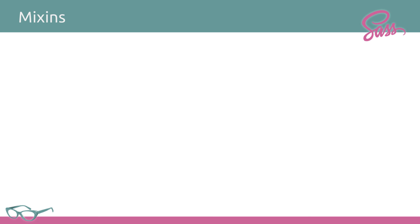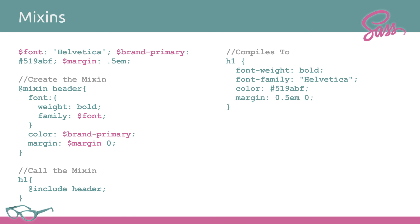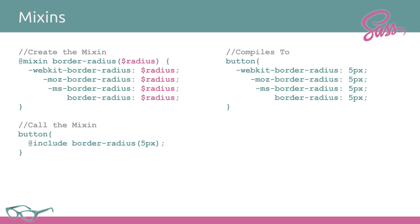Mixins are sort of like functions, except they actually put output into your source code. An example is a header mixin that sets font-weight, font-family, color, and margin wherever you include it. If you include it into h1 — and you can have additional CSS inside h1 as well — it'll fill that mixin content into your h1. This lets you call common, repeatable things. You can also add parameters to mixins so you can pass in variables and utilize them.